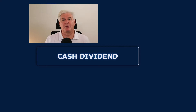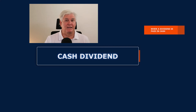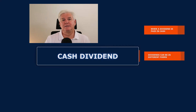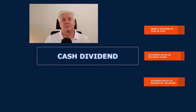In closing, three quick bullet points regarding a cash dividend. First, a cash dividend is cash paid out to shareholders. Second, understand how a dividend is being presented — dividends can be presented in different forms, and it could be an important consideration when investing in a stock as part of its total return. Third, the dividend policy is decided by the board of directors.